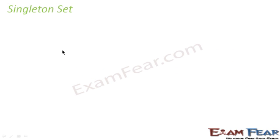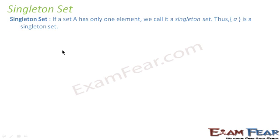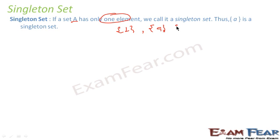Now let me introduce you to a new term called singleton set. A singleton set is a set which has only one element. For example, a set that has only one element called A is a singleton set, or a set that has only one person called Goupal is also a singleton set.